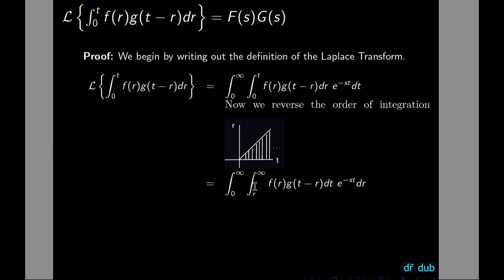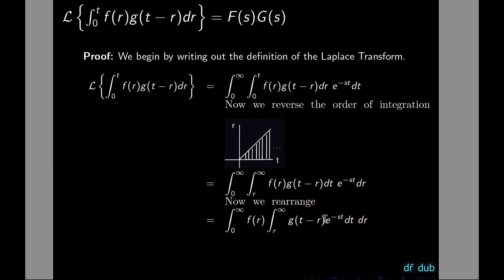So t is going to go from r out to infinity, and r is going to go from 0 to infinity. That's our order of integration reversed. Now we need to move the e to the negative st term inside the t integral, and we can move f(r) outside the t integral. That is our rearrangement.